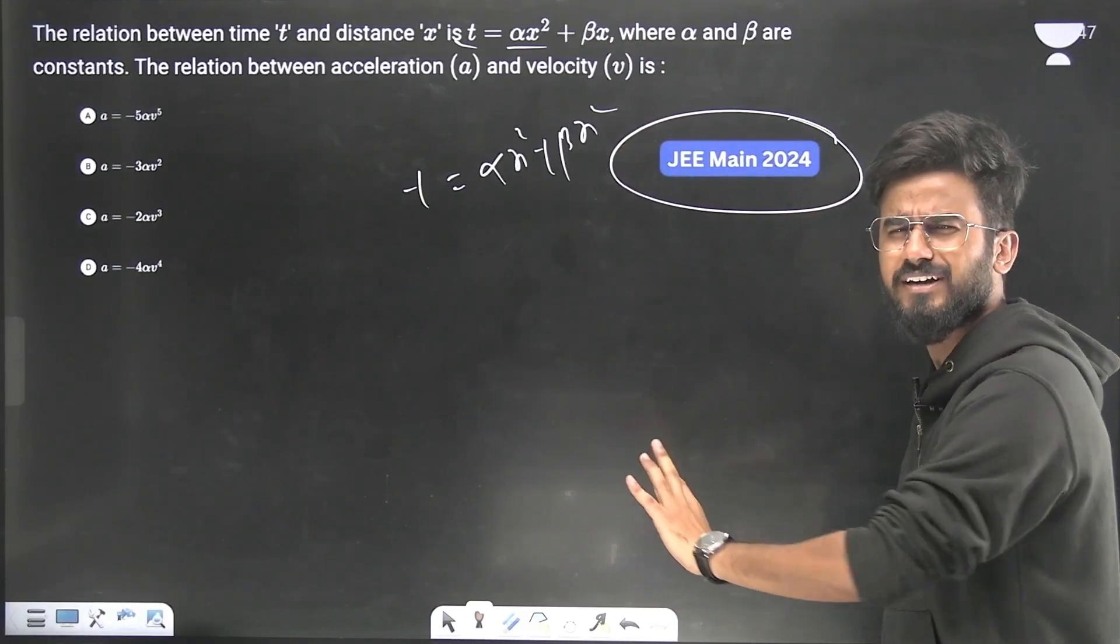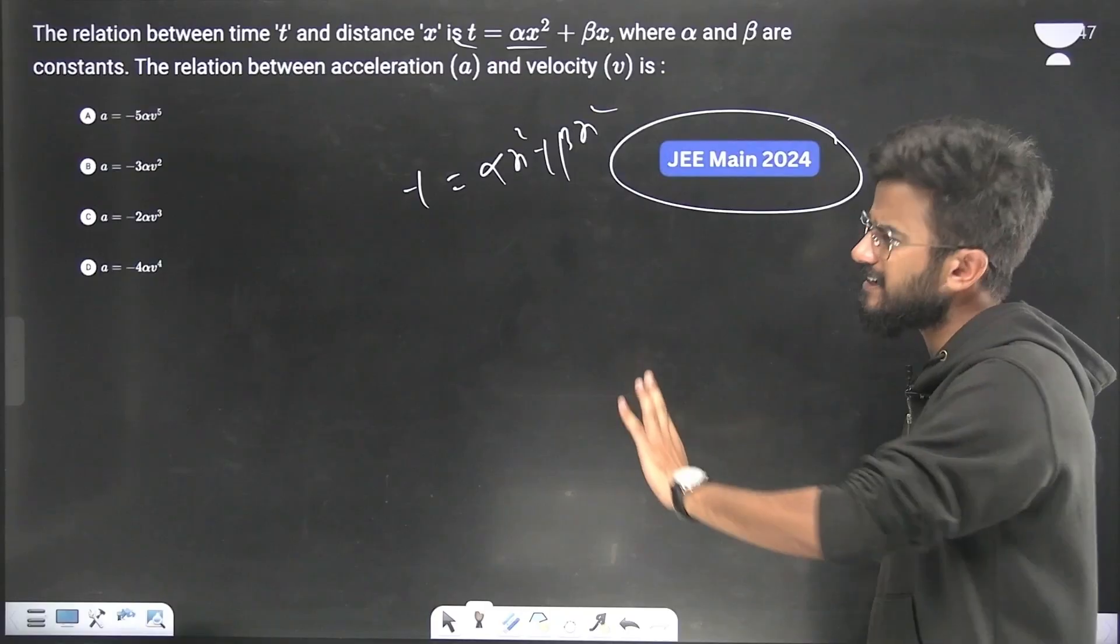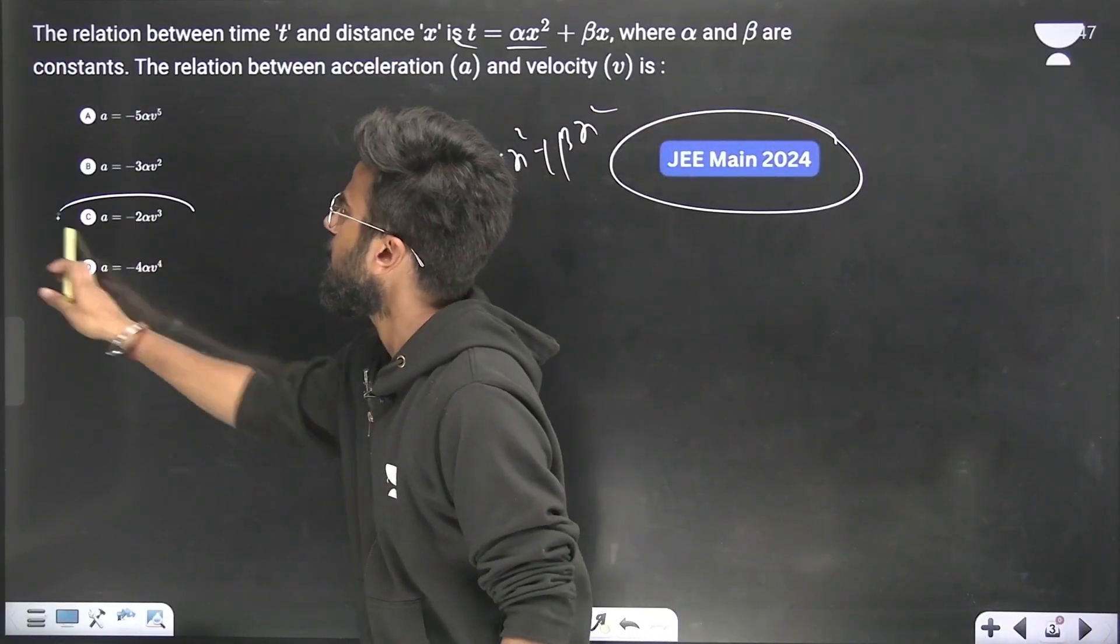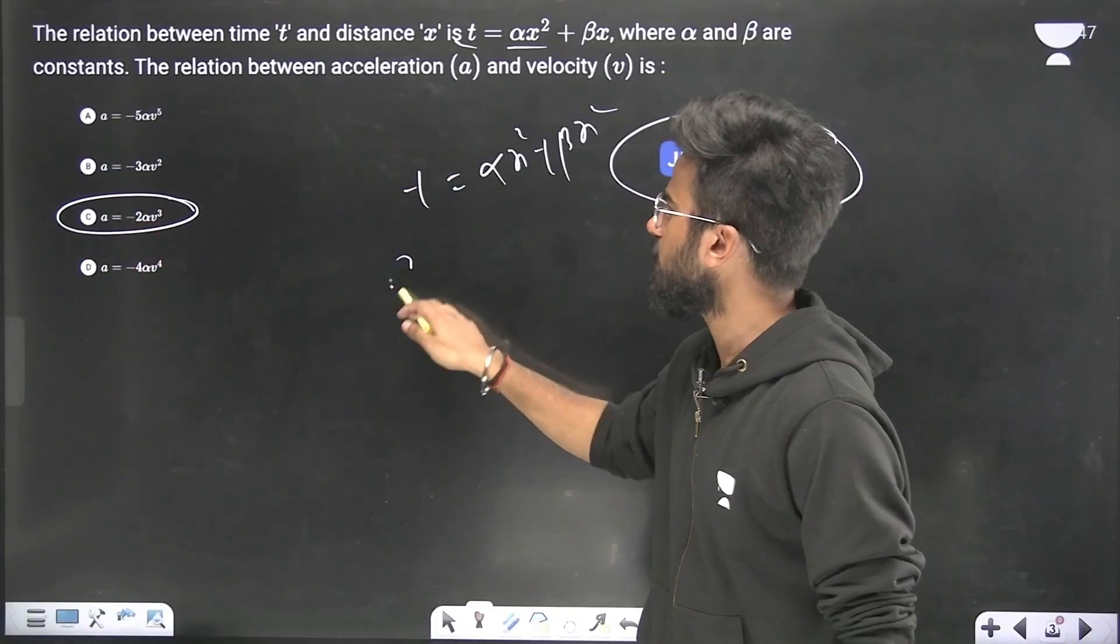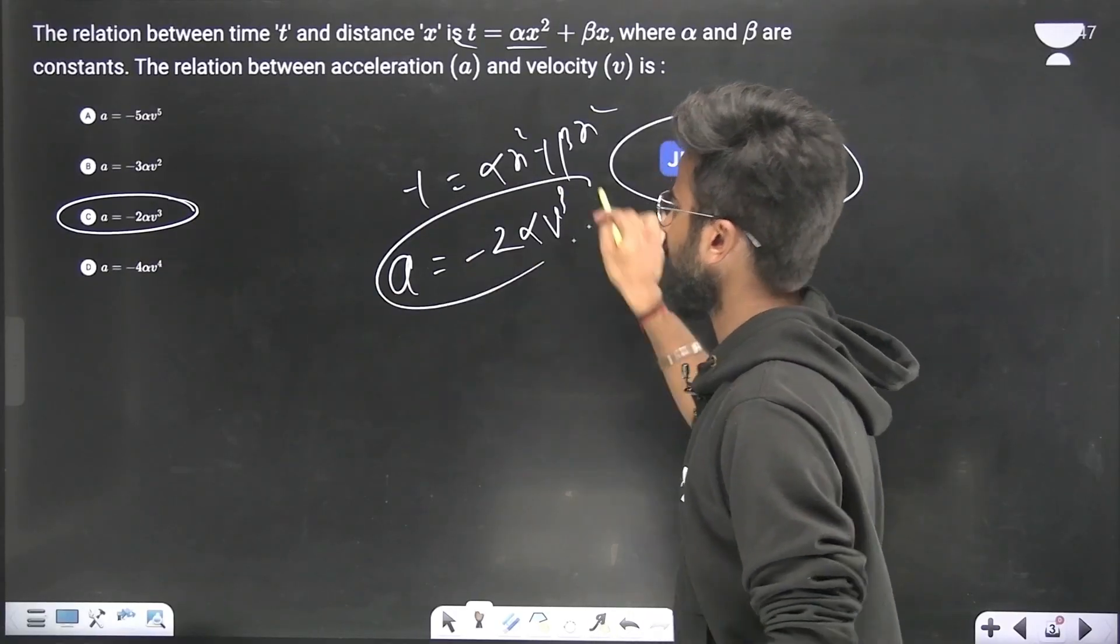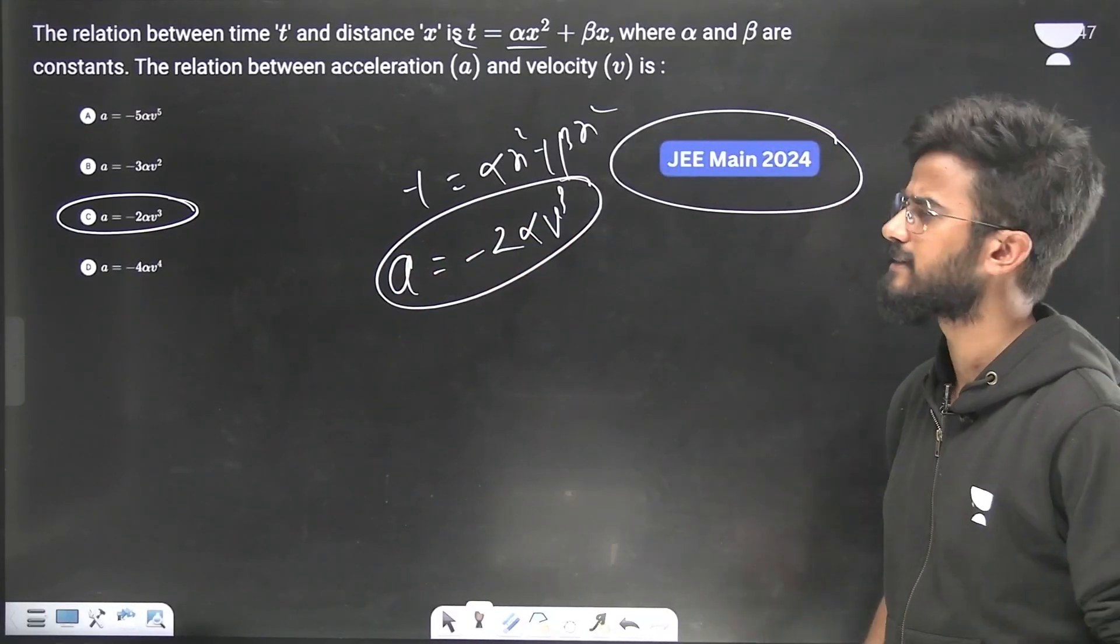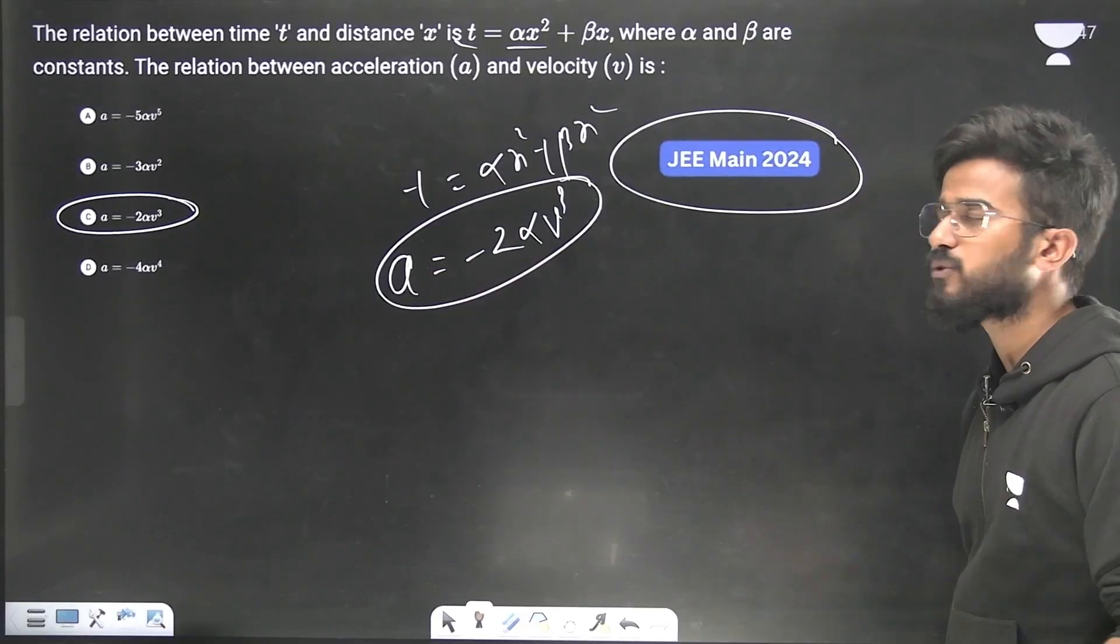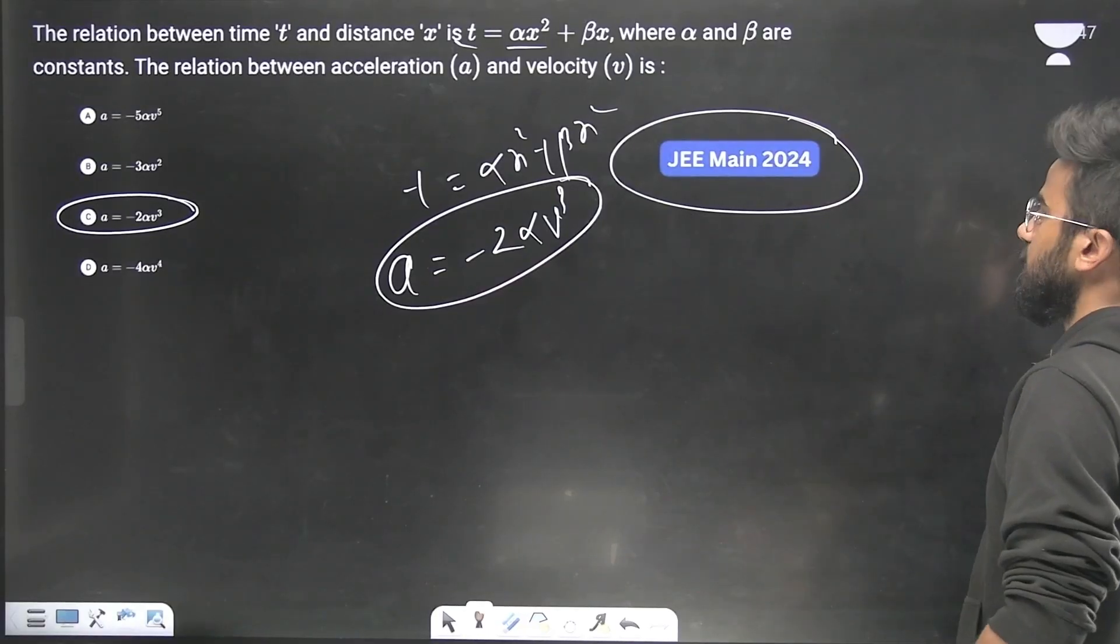So I solved that particular PYQ in this session and I realized that the answer was a equals minus 2 alpha v cubed. This was the answer. I took that question and then I moved on to the next question, and the next question was from JEE Main 2021.